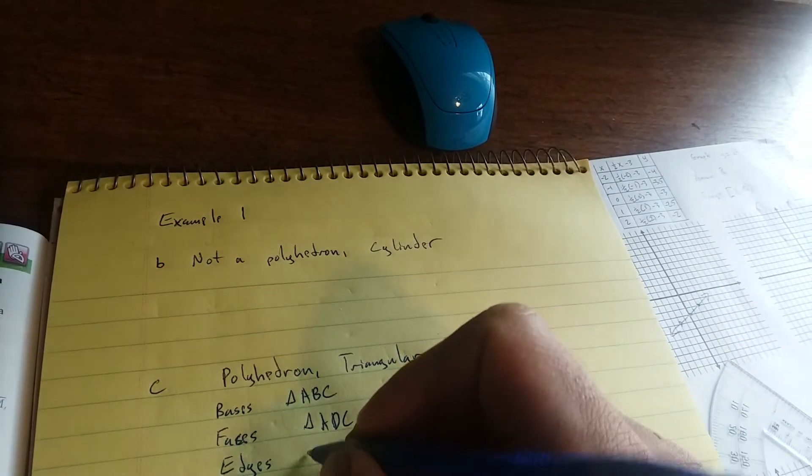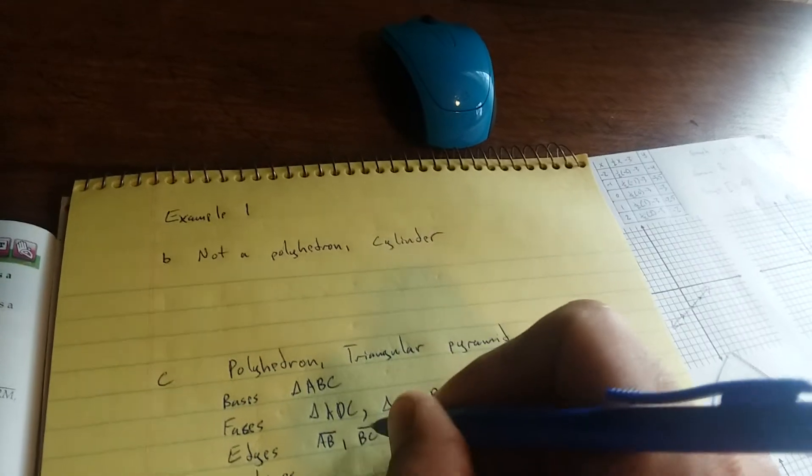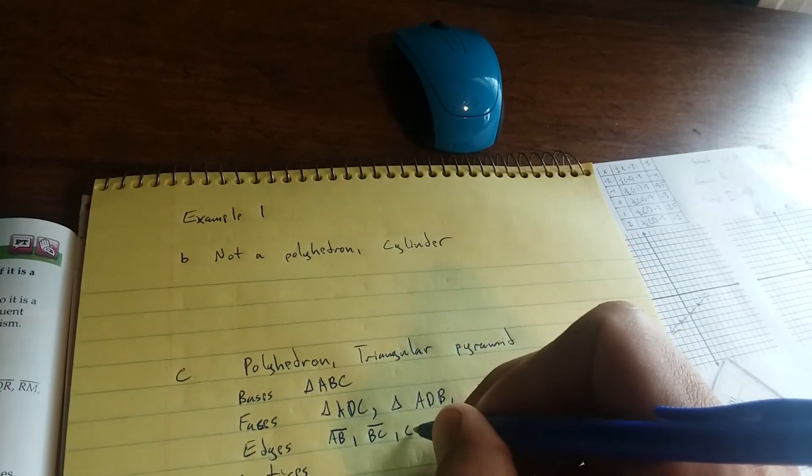and CA. Make sure you're using the segment notation. We have AB, BC, CA, and then I'm going to